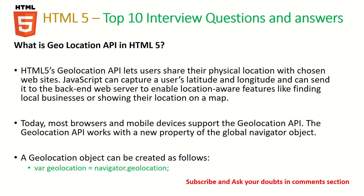The next question is: explain the Geolocation API in HTML5. The HTML5 Geolocation API lets users share their physical location with chosen websites, using latitude and longitude. It is mostly used with location-based services like Google Maps, Uber, or nearby shopping. You can access it via the navigator object: navigator.geolocation — this is how you grab a system's location from any browser.